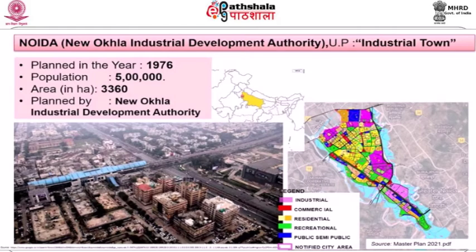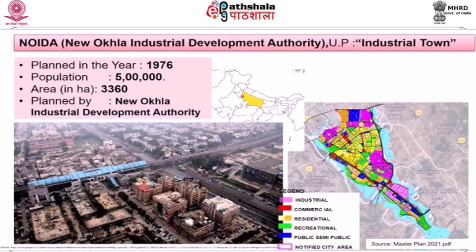The next case study is Noida — the New Okhla Industrial Development Authority area — in Uttar Pradesh. Noida is also an industrial town; it was planned in 1976 with a population of 5 lakhs and an area of 3,360 hectares. It was planned by the New Okhla Industrial Development Authority. From the land use map of Noida you can see the industrial area and the residential component.